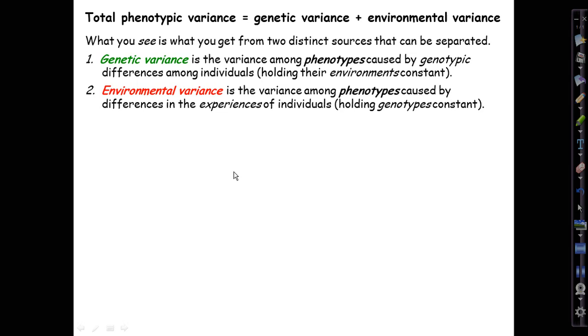Conversely and symmetrically, the environmental variance is the variance not of the environment itself, but it's the variance among the phenotypes, which is caused by differences in the experiences of individuals conceptually holding genotypes constant. So it's the variance we would get even if everybody had exactly the same genotype with respect to all variation that can affect our trait of interest.